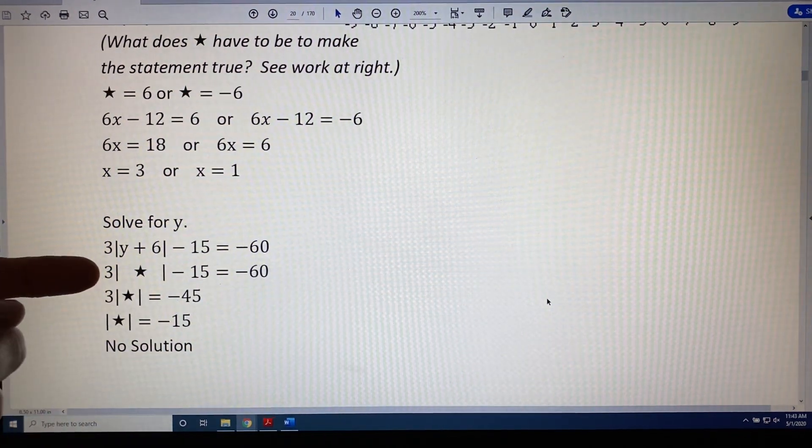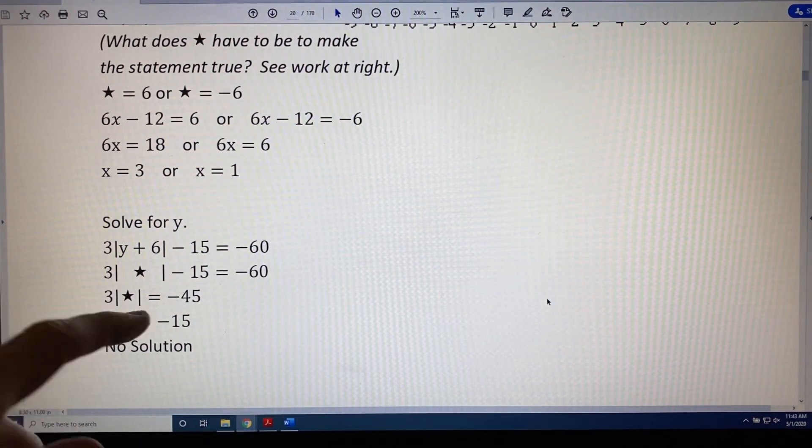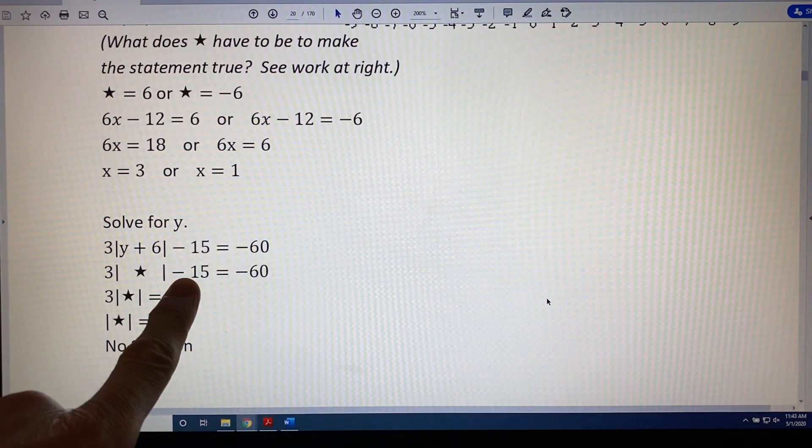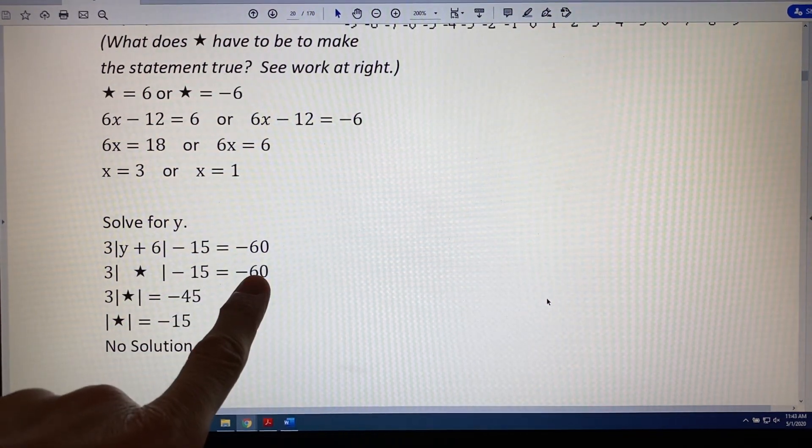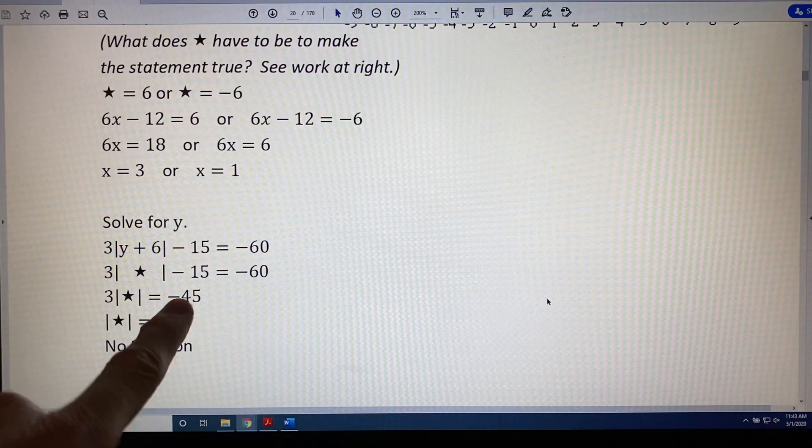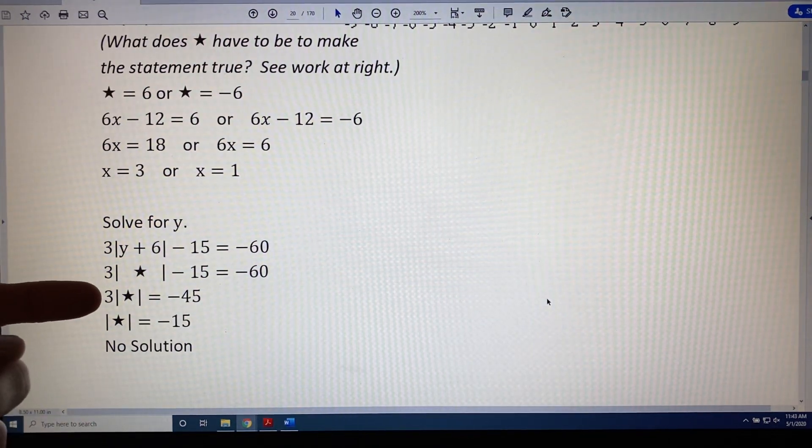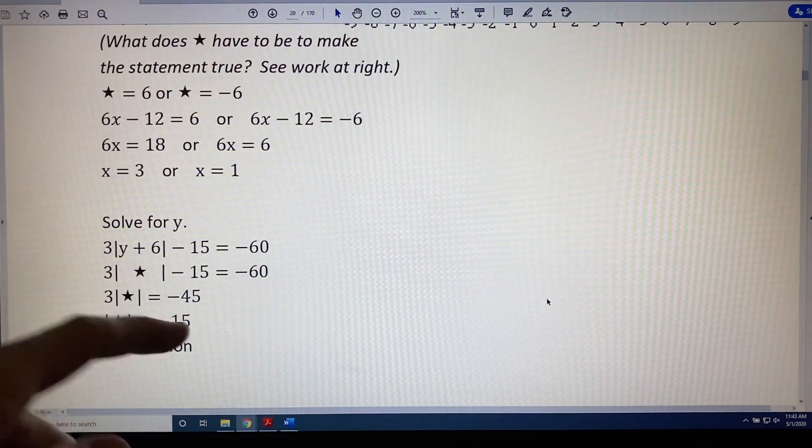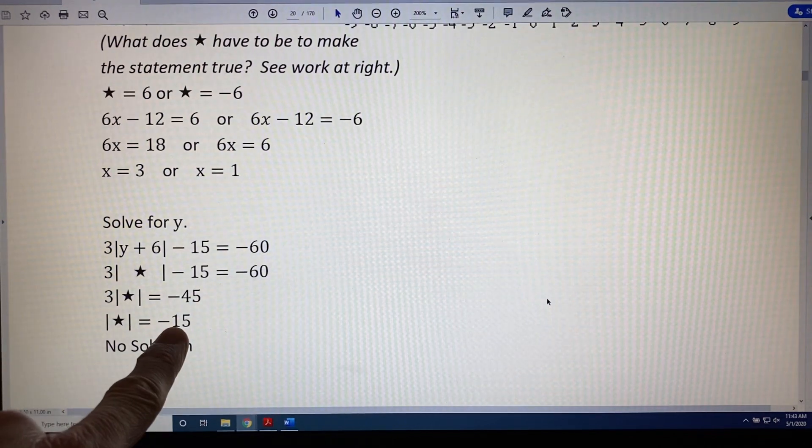Next, get the absolute value of star alone. The first step to achieving this is to add 15 to both sides. Negative 60 plus 15 is negative 45. The second step to achieving this is to divide both sides by 3. Negative 45 divided by 3 is negative 15.